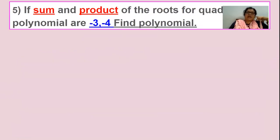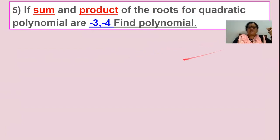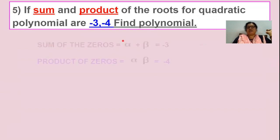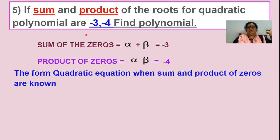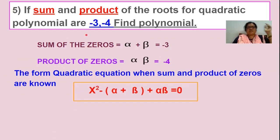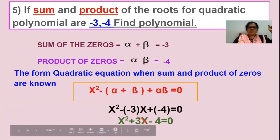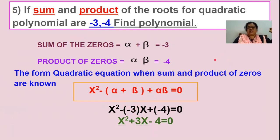Fifth problem: if the sum and the product of the zeros of a quadratic polynomial are given, find the polynomial. In the previous slide the zeros were given and we needed to find the sum and product. Now the sum and product are given directly, so there is no need to add. In place of alpha plus beta substitute minus 3, and in place of alpha times beta substitute minus 4 directly into the formula to get the polynomial.